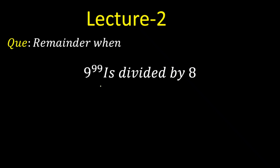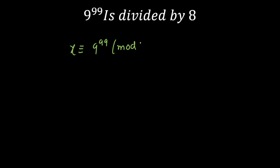The first question is: find the remainder when 9 raised to the power 99 is divided by 8. The question is 9 raised to the power 99 is divided by 8. So let's say x is the remainder, and I'm going to write this in congruent format: x is congruent to 9 raised to the power 99 modulo 8. This means if we divide 9 raised to the power 99 by 8, then x will be the remainder.